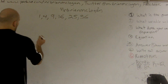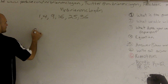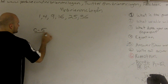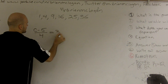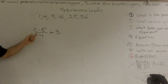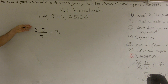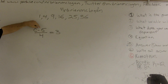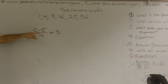We have c minus 5 over 4 equals 3. So what you want to make sure you do is you see that we have a fraction going on. Usually I say to undo a subtraction, you want to add that 5. But be careful — that 5 is being divided by the 4.